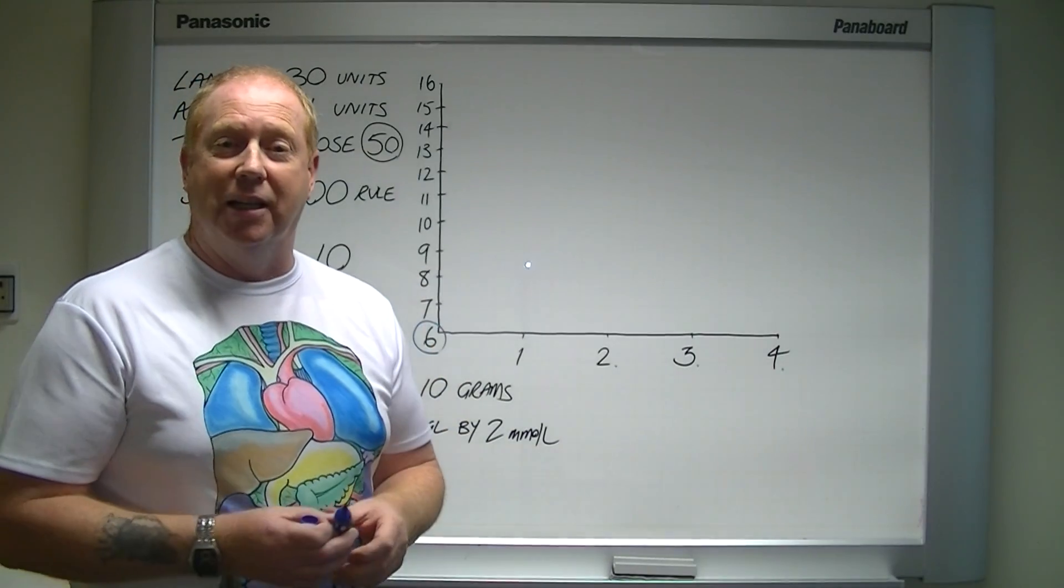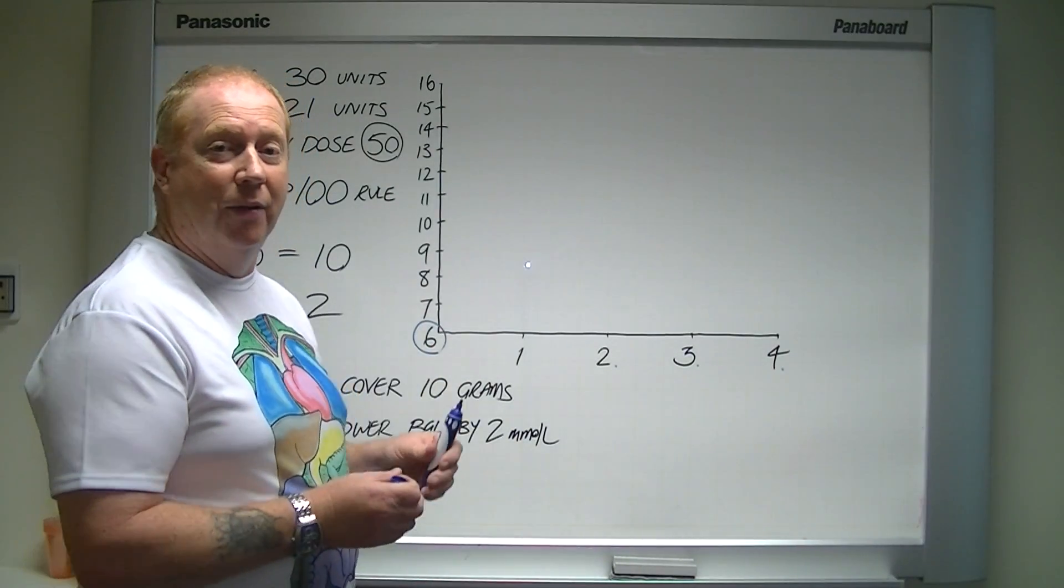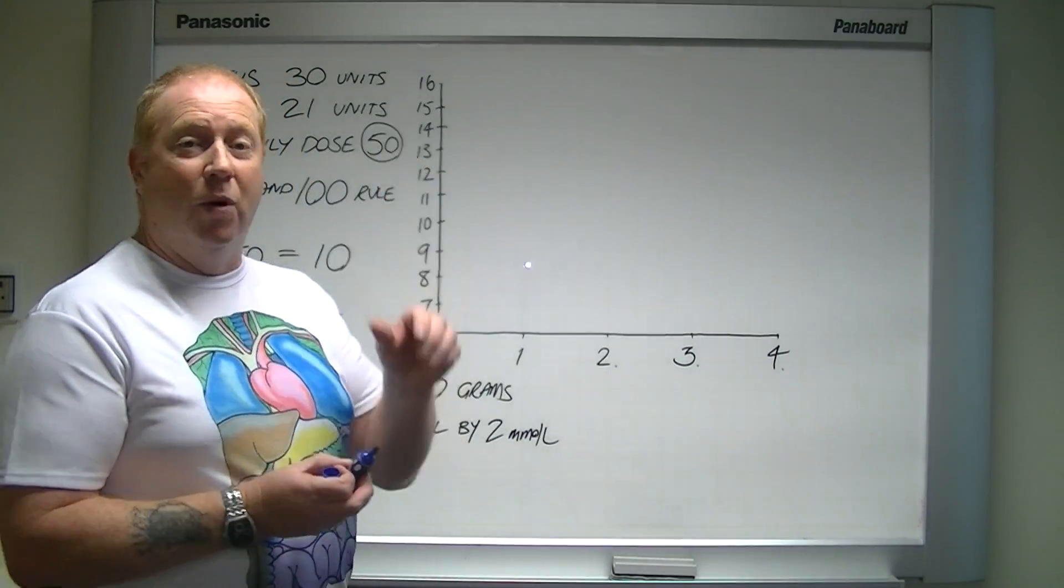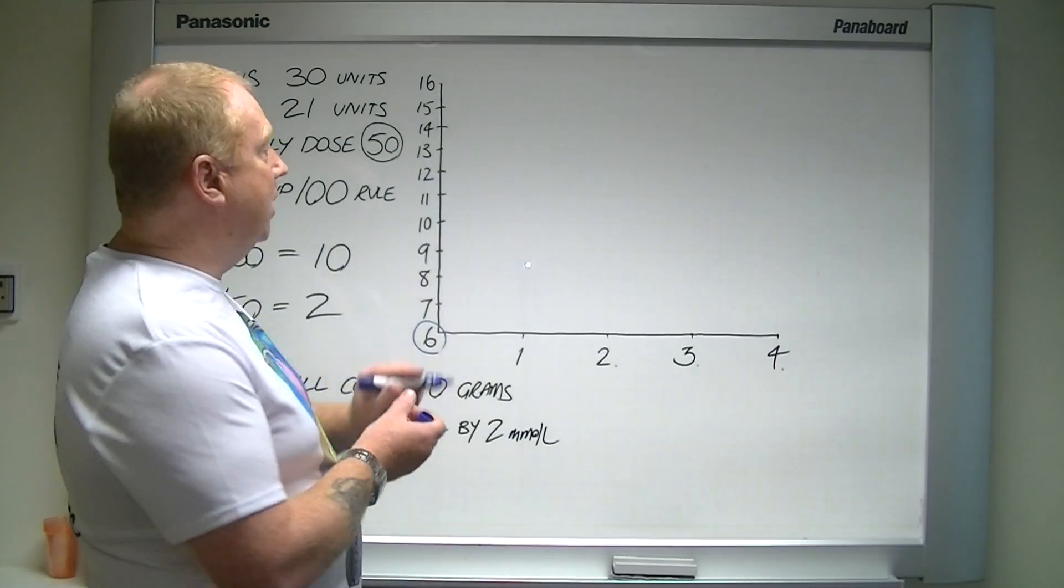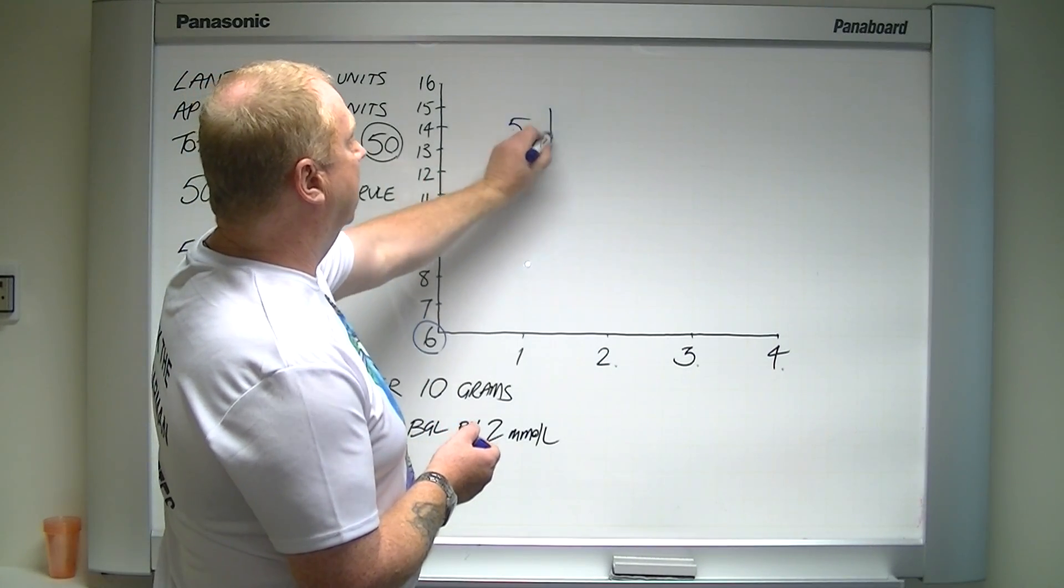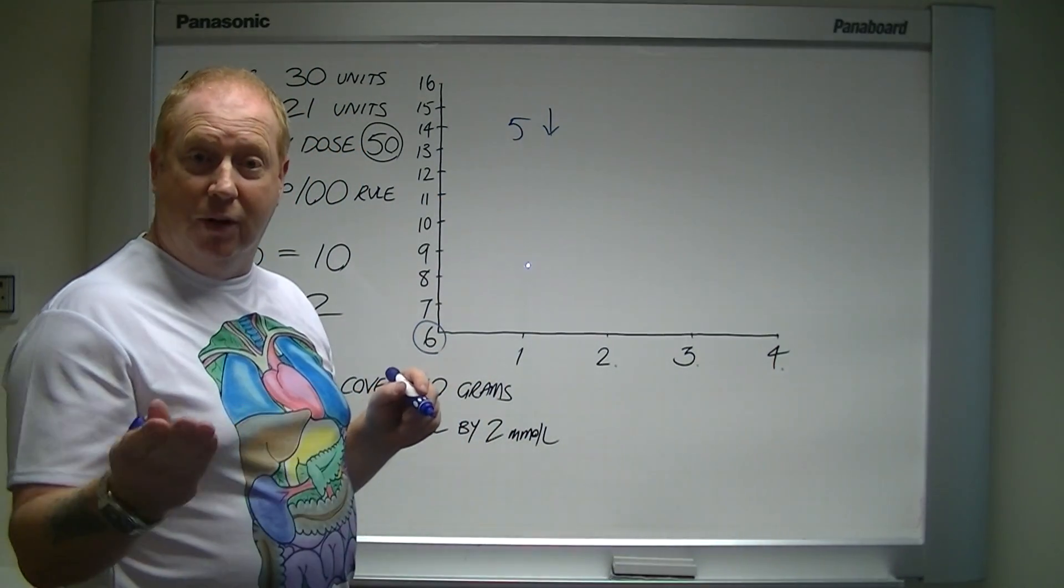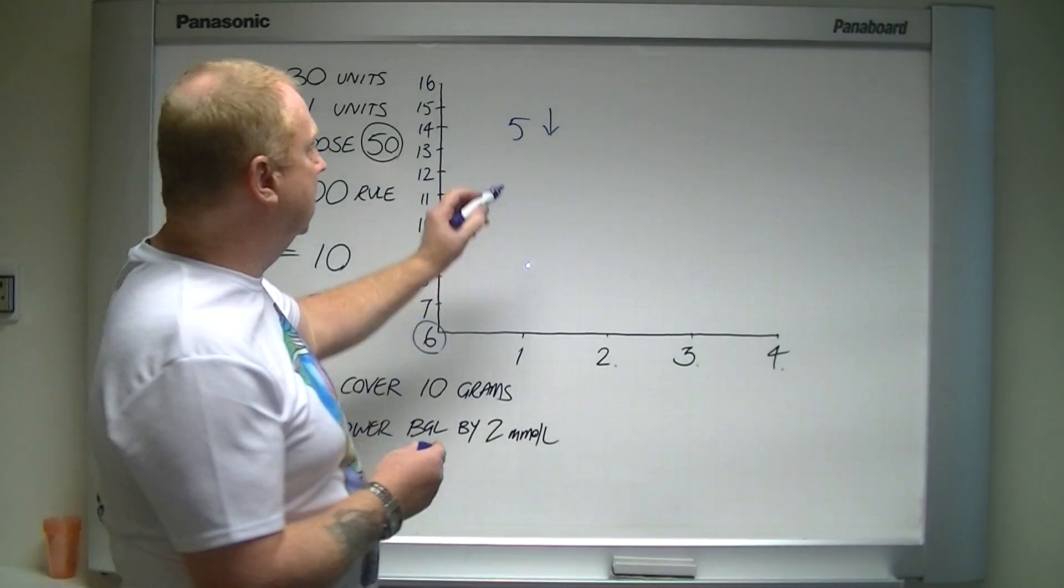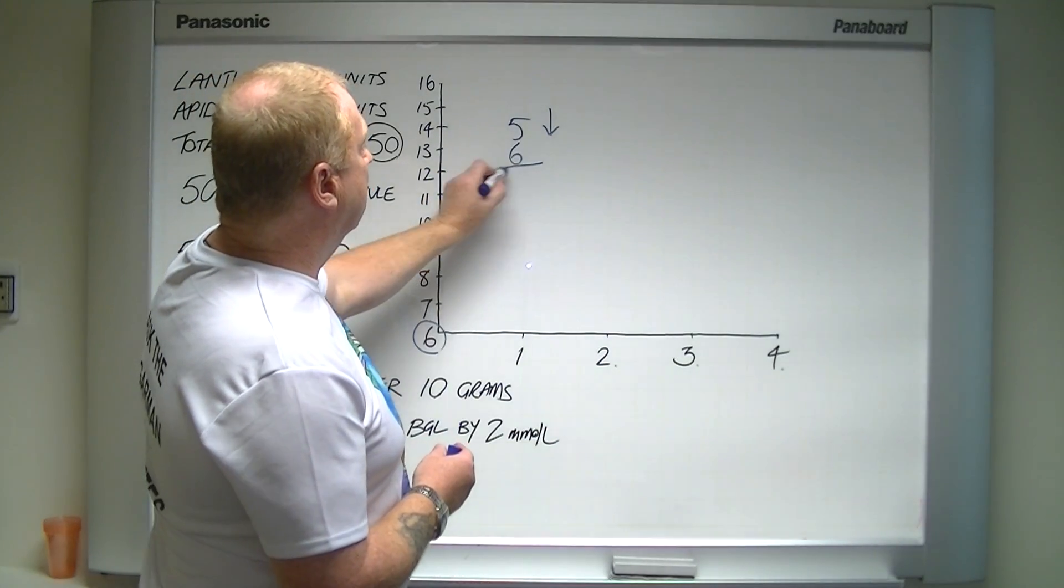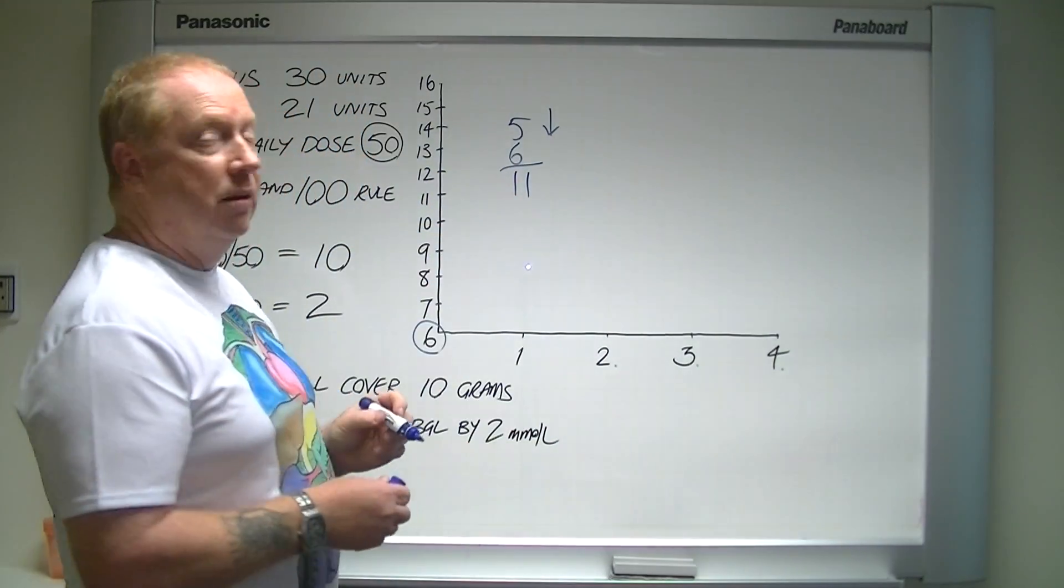So I've calculated how much insulin I need to have, which is 5 units. One unit will lower me 2 millimoles. So I need to have 5 units to correct my sugar level. Six units to cover the 60 grams of carbohydrate. One unit will cover 10 grams. Six units. Add them together and get 11 units of insulin.